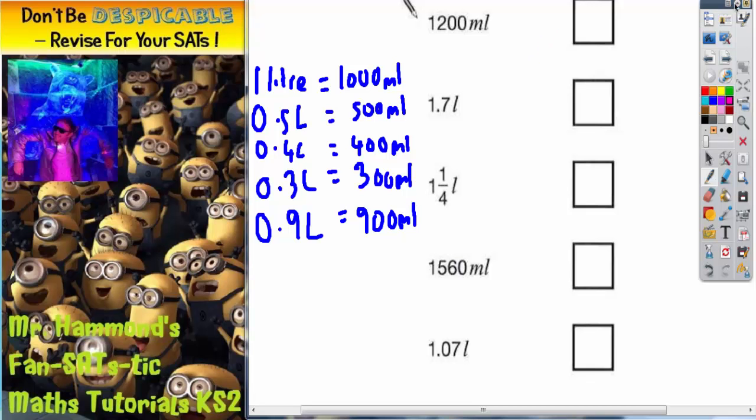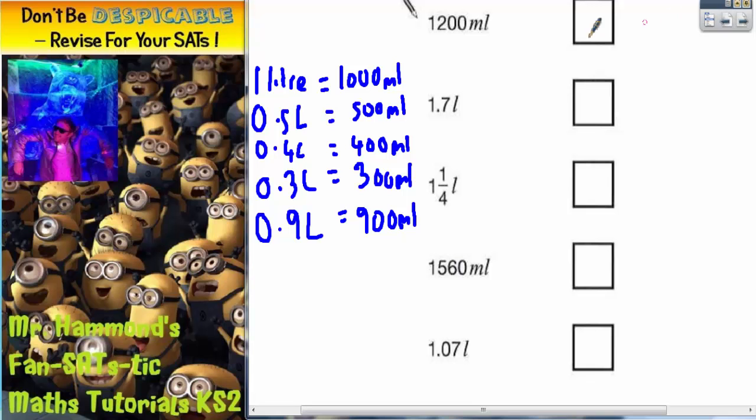So let's get a different color of pen. So some of these decimals only have one digit after the point. So remember, 1.7 is actually the same as 1.700. So that will help us.